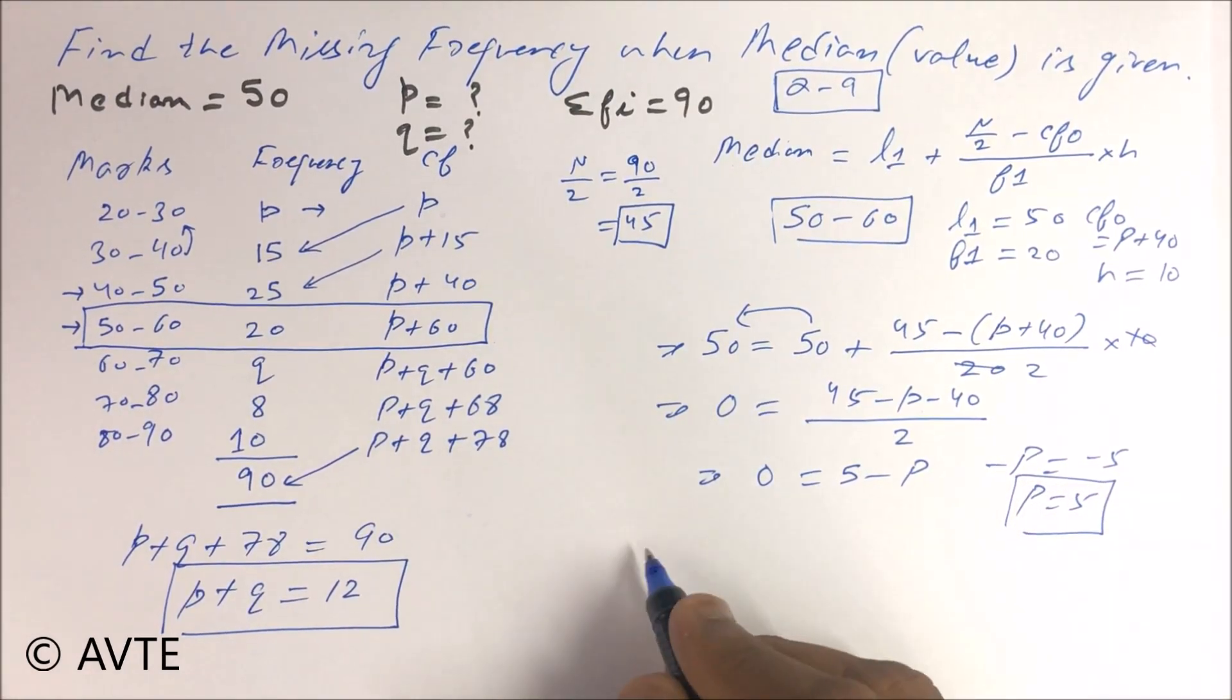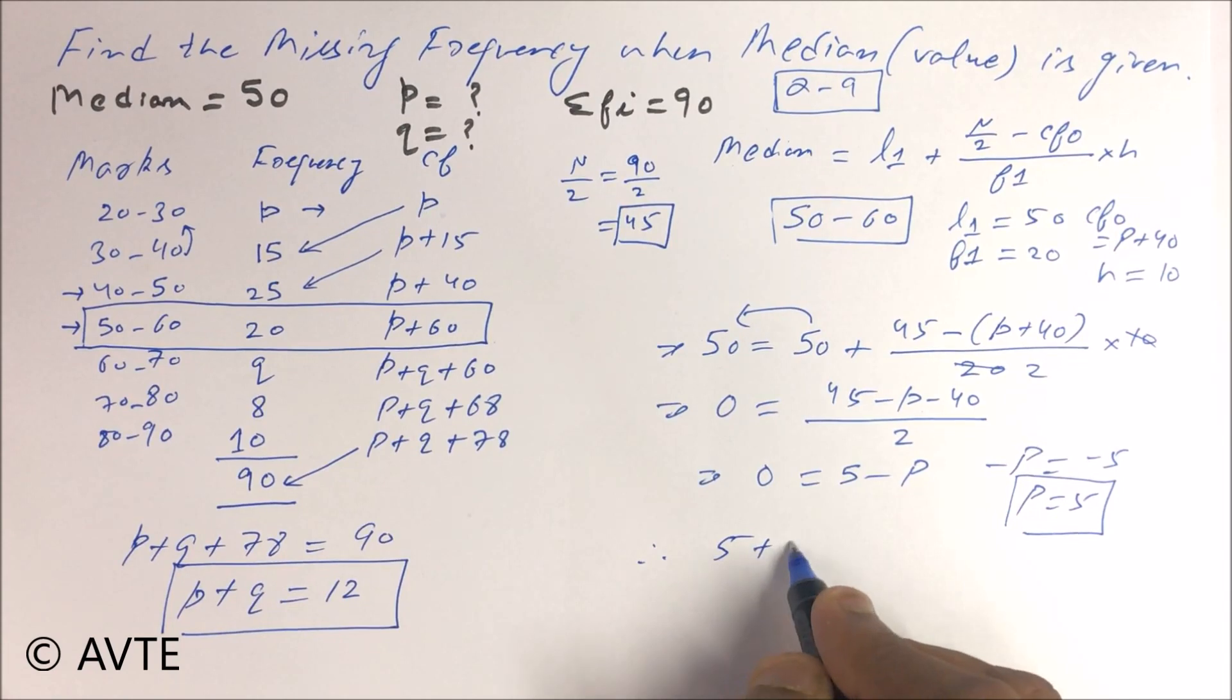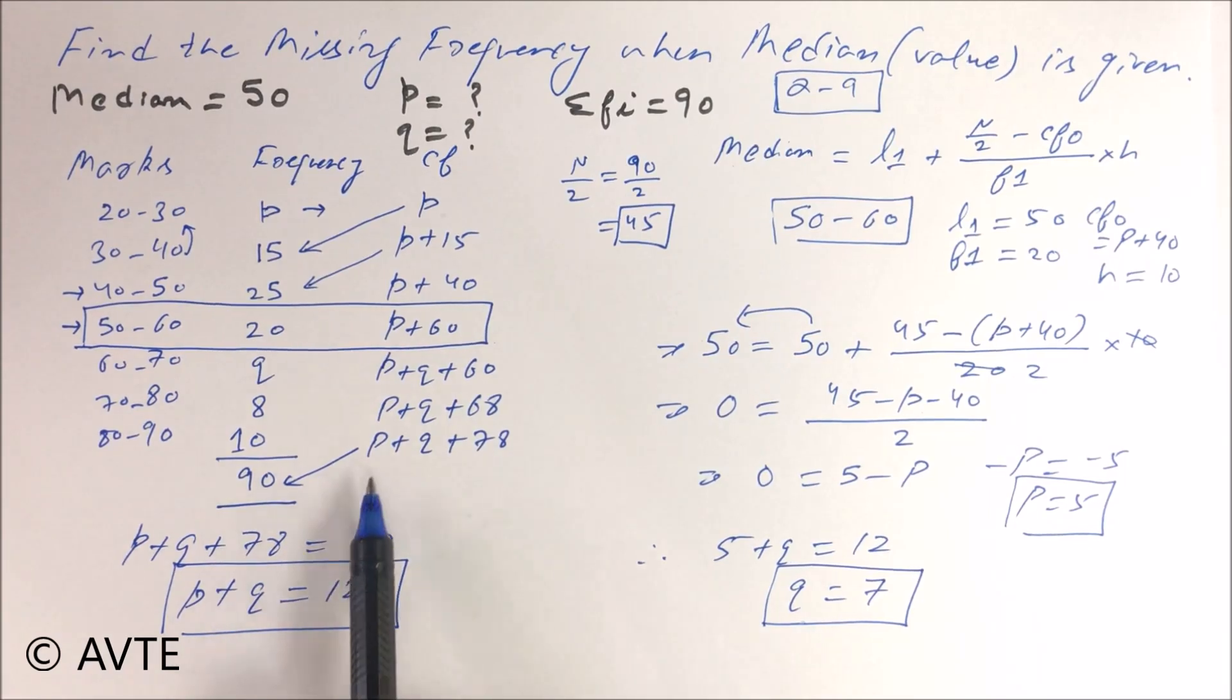If the value of P is 5 then 5 plus Q is 12, the value of Q is 7. You can check 5 plus 7 plus 78 is 90. I hope you understood this question, so keep watching our channel AVTE.